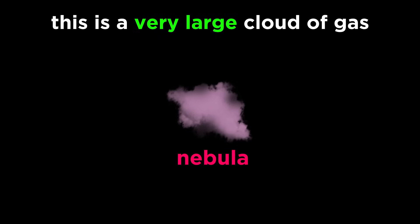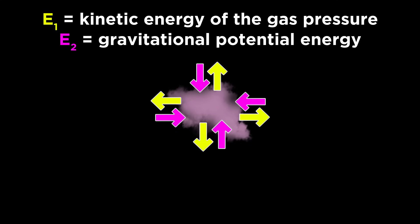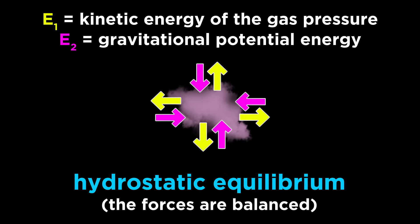A gas cloud like this, also called a nebula, will remain in equilibrium if the kinetic energy of the gas pressure, or the force pushing out, is precisely in balance with the gravitational potential energy, or the force pushing in, a situation called hydrostatic equilibrium.